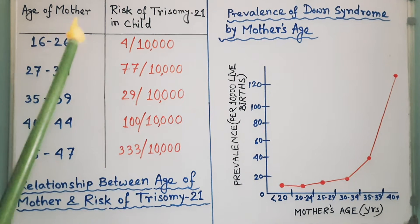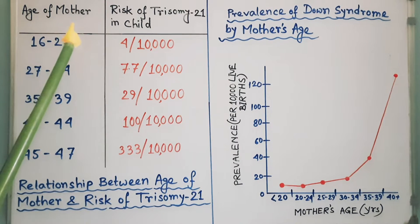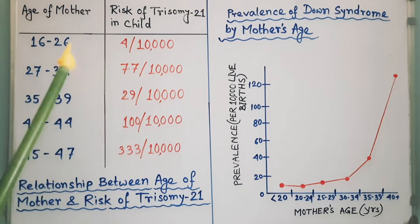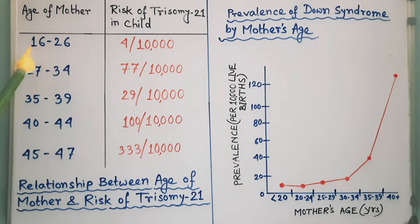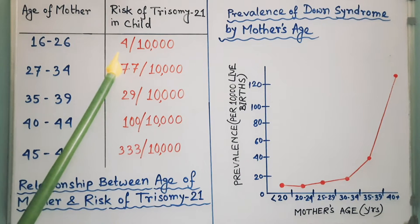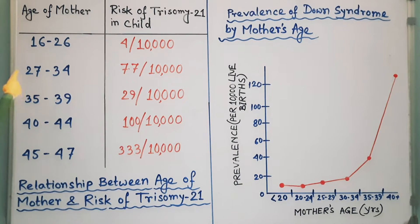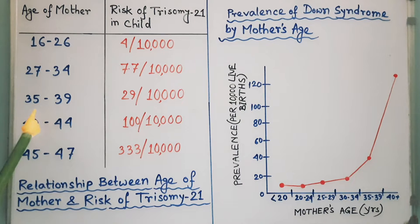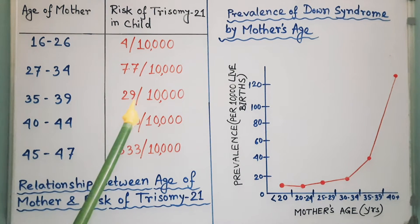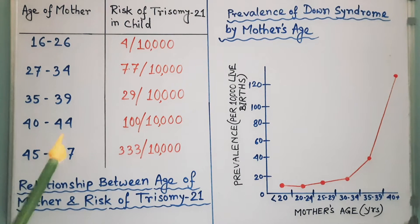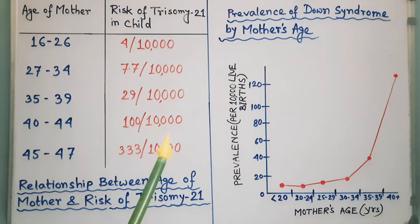Here I have drawn a table showing the relationship between age of mother and risk of trisomy 21 in a child. Statistically, it is established that if the age of mother is between 16 to 26, then the risk of trisomy 21 in the child is 4 out of 10,000. If the age is between 27 to 34, then it is 7.7 out of 10,000. If the age is between 35 to 39, then it is 29 out of 10,000. If the age is between 40 to 44, then the risk is 100 out of 10,000.